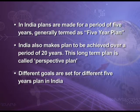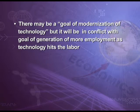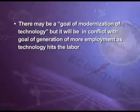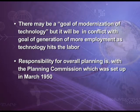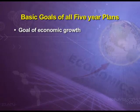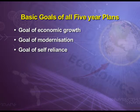Different goals are set for different five year plans. For example, if there is a goal of modernization of technology, we have to adopt machinery and remove labor, but this conflicts with the goal of generating more employment, as technology reduces employment. The ultimate responsibility for overall planning is with the Planning Commission, which was set up in March 1950. The Planning Commission set several socioeconomic objectives under various five year plans. Whatever the specific objectives, the basic goals behind all five year plans are categorized into four categories: economic growth, modernization, self-reliance, and equity.